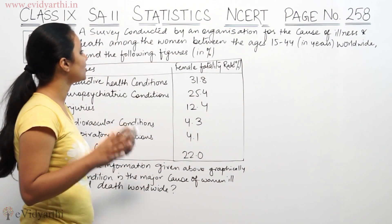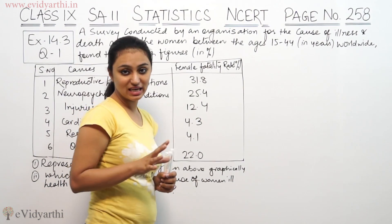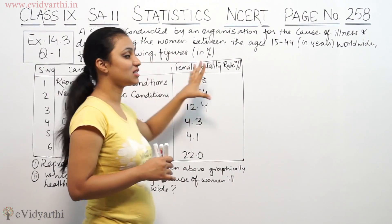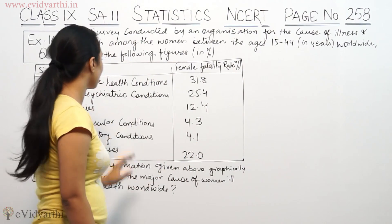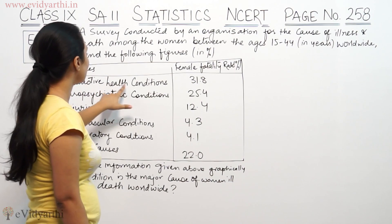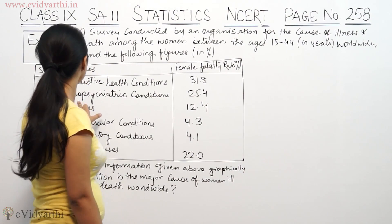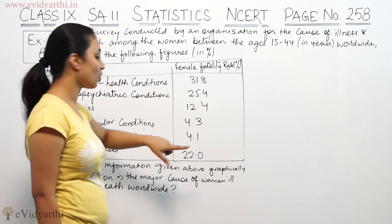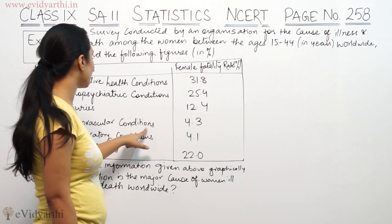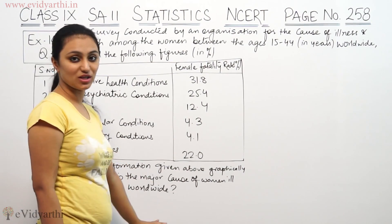This survey covers women's conditions in the 15 to 44 years age group. In reproductive health conditions, the fertility rate is 31.8. Due to numerous neuropsychiatric conditions, it is 25.4. Injuries account for 12.4. Due to cardiovascular conditions, it is 2.3. Respiratory conditions account for 4.5. And other causes, it is 22 percent.